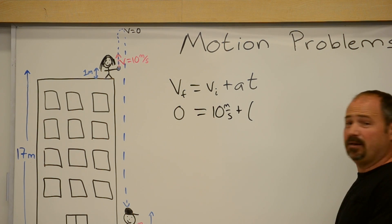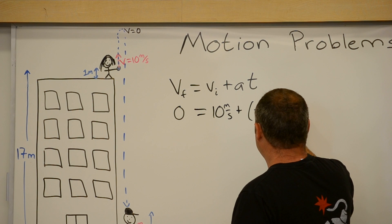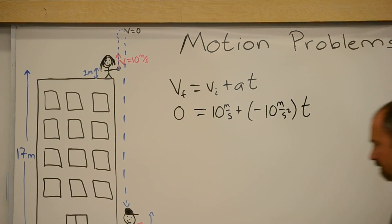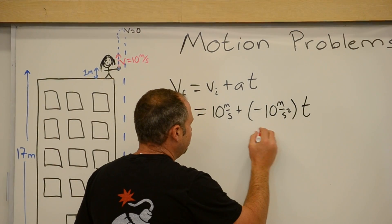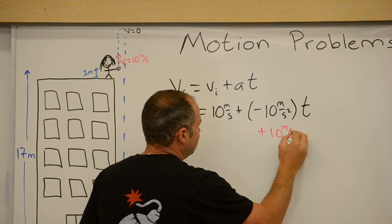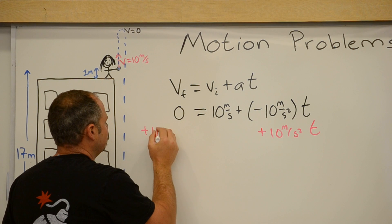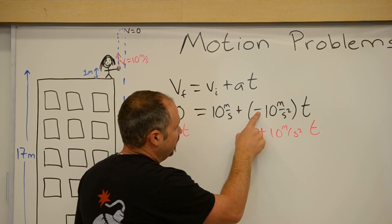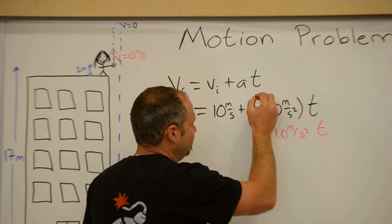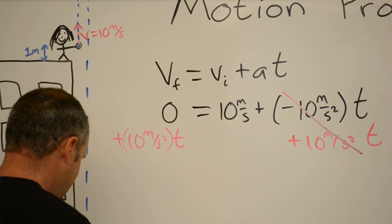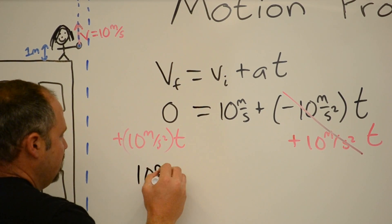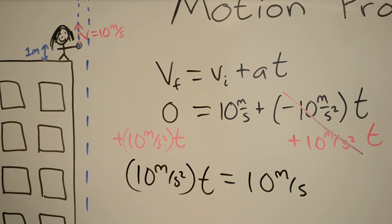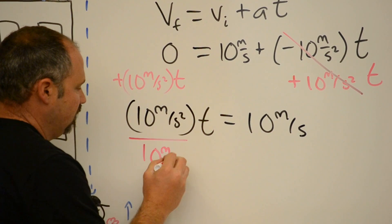And then plus a t, the acceleration is just the acceleration of gravity, minus 10 meters per second squared times time. And now we can add to both sides times t, times t. Negative plus positive, this equals zero. So now I have that 10 meters per second squared times time is equal to 10 meters per second. And now I will boldly divide both sides by 10 meters per second squared.